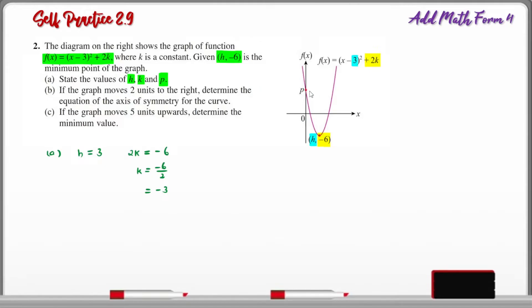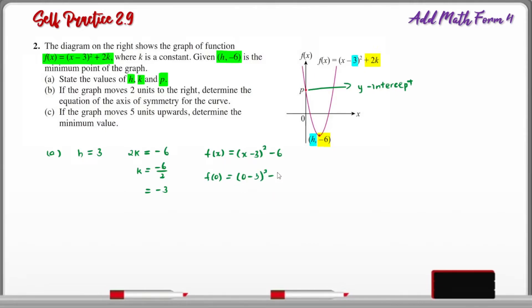To find p, from the graph we know that p is the same as the y-intercept. The function f of x is now equal to (x minus 3) squared minus 6, since 2k equals negative 6. To find the y-intercept, we set x equal to 0 and substitute into the function. The bracket gives (0 minus 3) squared equals 9, then 9 minus 6 equals 3. So 3 is the y-intercept, therefore p equals 3.